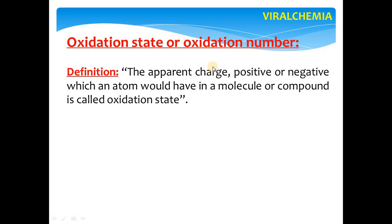This apparent charge can be positive, negative, or neutral. Overall, H₂O has a charge of zero — it is neutral. But within the molecule, H has its own charge and O has its own charge, and their algebraic sum equals zero. This apparent charge is what we call Oxidation State or Oxidation Number. For ions, for example Al³⁺, the +3 on the symbol of Aluminium represents its oxidation number.